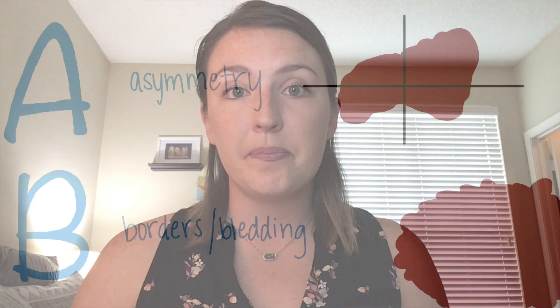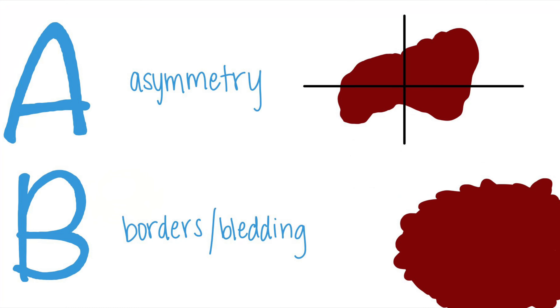If you have a mole or a lesion on your skin that you're suspicious of, you can use the ABCDE assessment. The A stands for asymmetry — as you can see in this example, this mole has an irregular shape. The B stands for borders and bleeding.